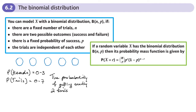So I want two of them to come up tails. It might be this one and this one, or this one and this one — there are lots of different ways tails could come up. The probability of getting two tails is 0.7 squared, but I also need three heads at the same time, so that's 0.3 cubed.